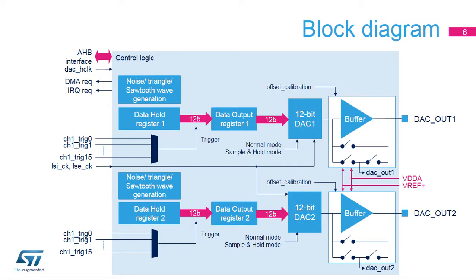Here you can see the simplified block diagram of the digital-to-analog converter. This DAC block is supplied by VDDA and uses VREF Plus as a voltage reference. The digital-to-analog converter is an AHB slave that supports DMA requests to fill the data hold register. Either of the DAC-OUT X signals can be disconnected from the corresponding output pin, which can then be used as an ordinary GPIO. DAC-OUT X signals can use an internal pin to connect to on-chip peripherals such as comparators and op-amps.